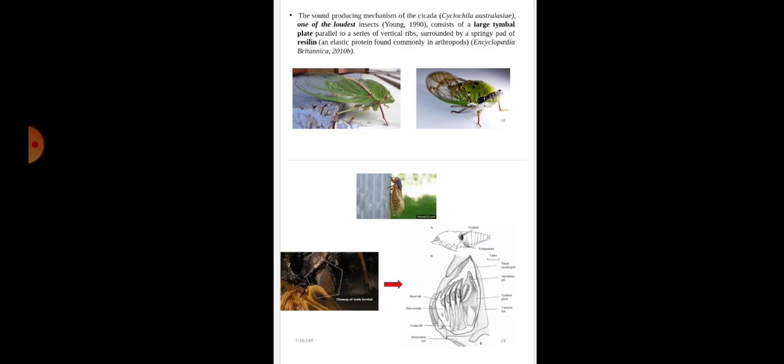How does the timbal work? When the timbal muscle is contracted, the timbal is pulled inward and a consequent distortion of the timbal membrane produces a pulse of sound. With the relaxation of the timbal muscle, the timbal springs back to its original position due to its elasticity and again produces another pulse of sound. Two timbals work synchronously. The frequency of the sound is about 390 to 450 cycles per second.